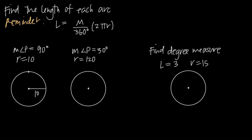If I go ahead and draw approximately a 90 degree angle, something like this, we're going to say that this is a 90 degree angle here. So the arc we're interested in is the arc from one end point of the angle to the other end point of the angle, and everything in between along the perimeter of the circle — this is the arc.